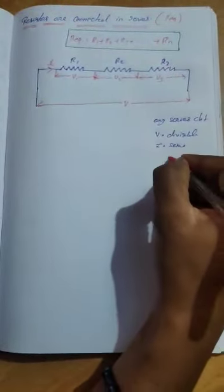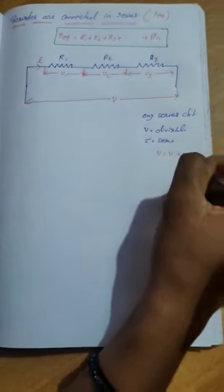This is a series circuit. Here, voltage V is divided into three parts because there are three resistors — that is V1, V2, V3. The same voltage is divided into three parts. That means V is equal to V1 plus V2 plus V3. And I is the same in this circuit. So in a series circuit, V is divisible and current is the same.